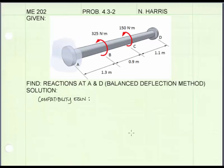Let's do this problem. The first thing we're going to do is identify our compatibility equation. With the balanced deflection method, we must recognize that all deflections that occur between the two fixed ends must be equal to zero. And we can write that as follows. The angle of twist occurring between A and B plus the angle of twist between B and C plus the angle of twist between C and D must sum to zero.